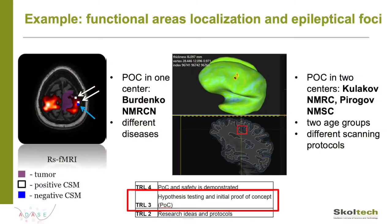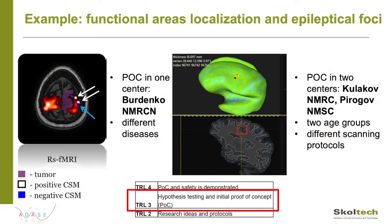Another project is aimed at the localization of epileptical foci — small brain areas responsible for epileptical seizure onset. The system is based on anomalous detection in static MRI brain images and is also needed prior to the operation. We work on this task with the Piragov Surgical Center and Kulakov Center for Obstetrics and Gynecology. The POC is now being tested in these two centers for both children and adult groups, with studies performed on different imaging protocols and different scanners. For both projects we are not completely sure of their safety and haven't tested them in all possible conditions, so we assume both to be at TRL 3 — we have a prototype that should be extensively tested to reach TRL 4, 5 and beyond.